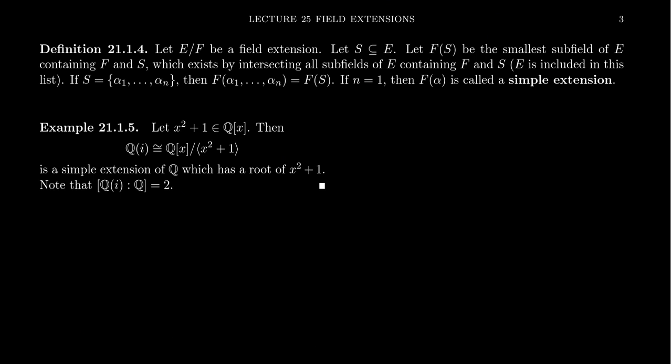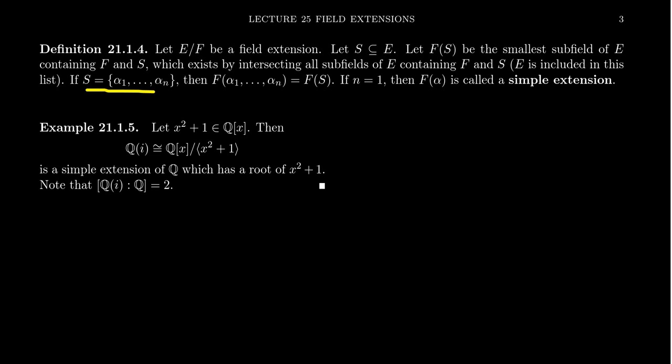An important definition connected to Kronecker's theorem is the following. Let E over F be a field extension and let S be some subset of E. Then we define F adjoin S to be the smallest subfield of E containing both F and S. Such a thing exists because it is the intersection of all subfields of E containing F and S — since E itself is in that list, the intersection is non-empty and contains F and S.